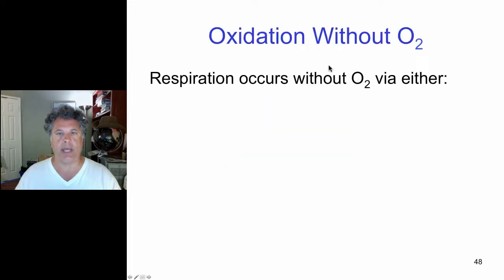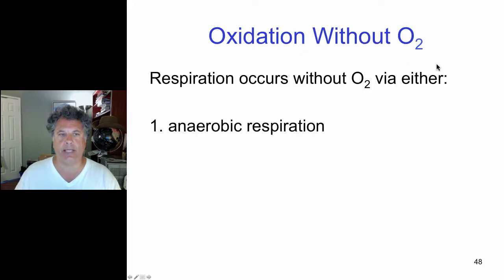Now let's move on now and talk about oxidation that occurs without oxygen. Now it sounds oxymoronic, how can you have oxidation without oxygen? Remember oxidation is simply the loss of electrons. So we can have a loss of electrons. We can rearrange the chemical bonds of food molecules without using O2 as the final electron acceptor.